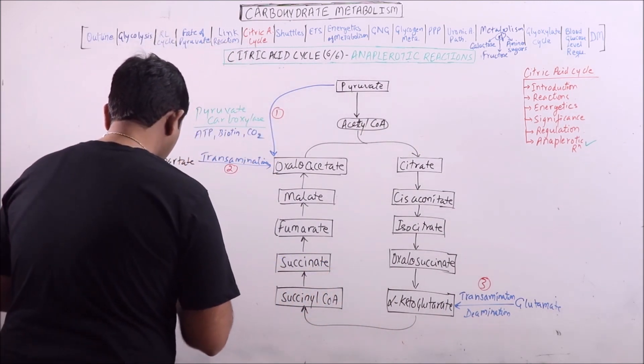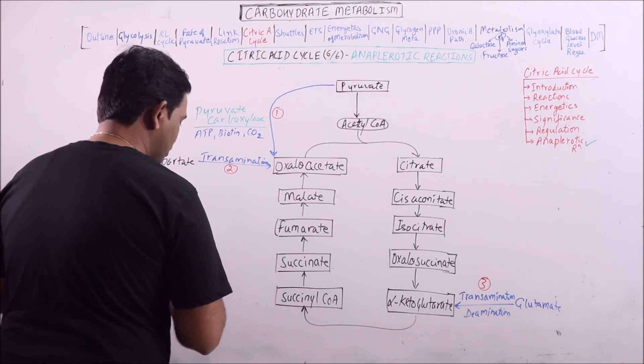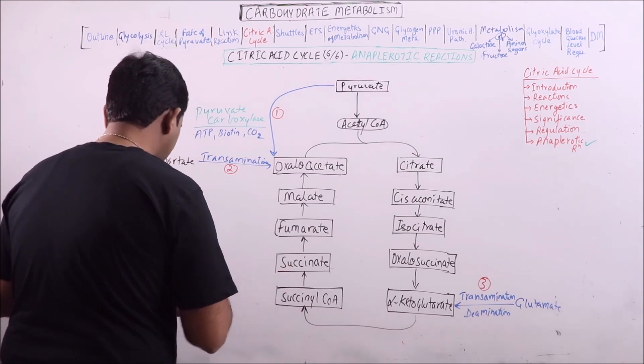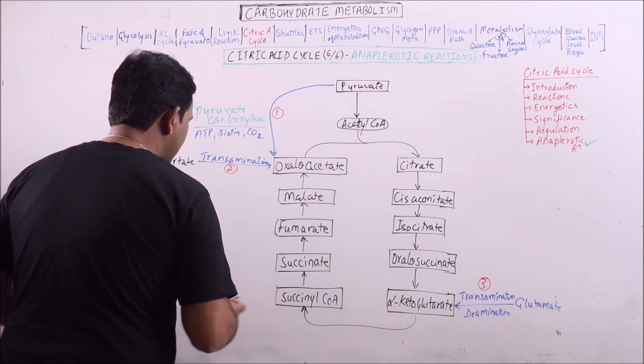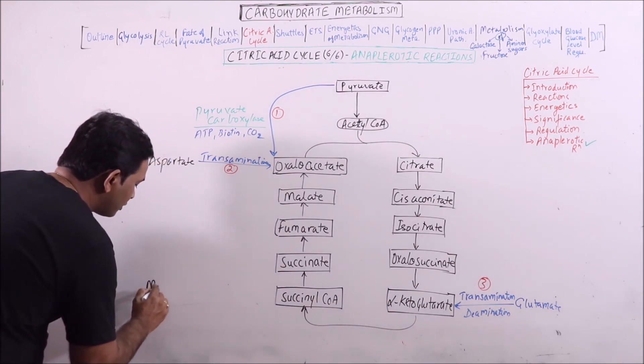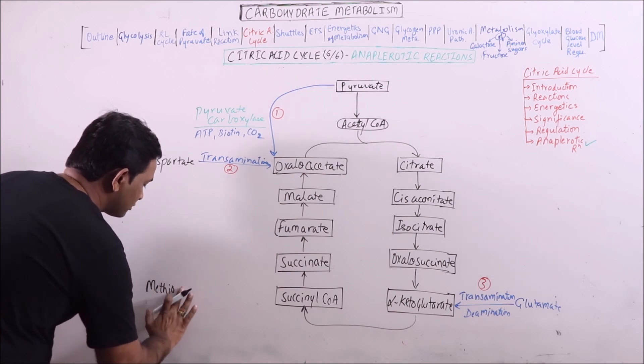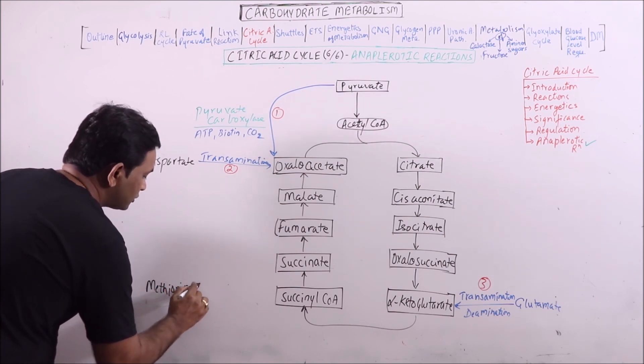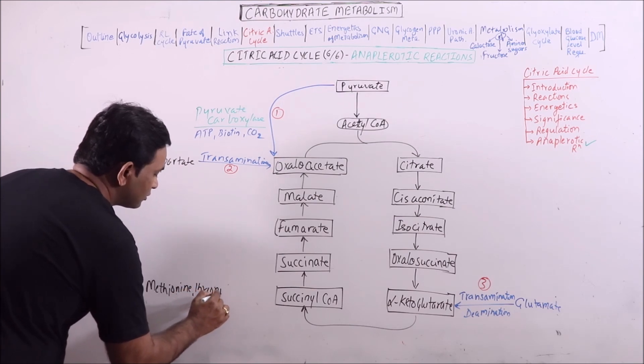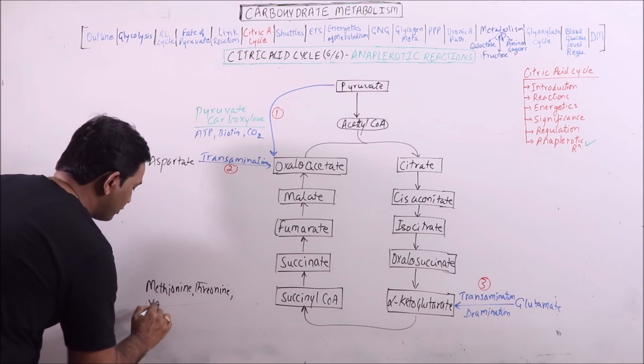Then various amino acids and compounds can be converted to succinyl coenzyme A like methionine, threonine, and valine.